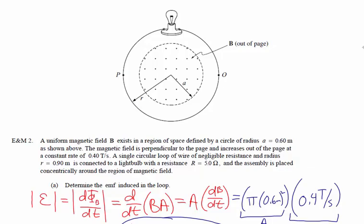Since the magnetic field is out of the page and getting stronger, we want a current to flow in the loop that creates a magnetic field into the page. To determine direction, point the thumb of your right hand in the direction of the current so that your fingers point inward at the center of the loop. At point O, the only way to do this is to have your thumb pointing down, so the fingers of the right hand curl around and point into the page. Therefore at point O the current is going down — the current is clockwise.